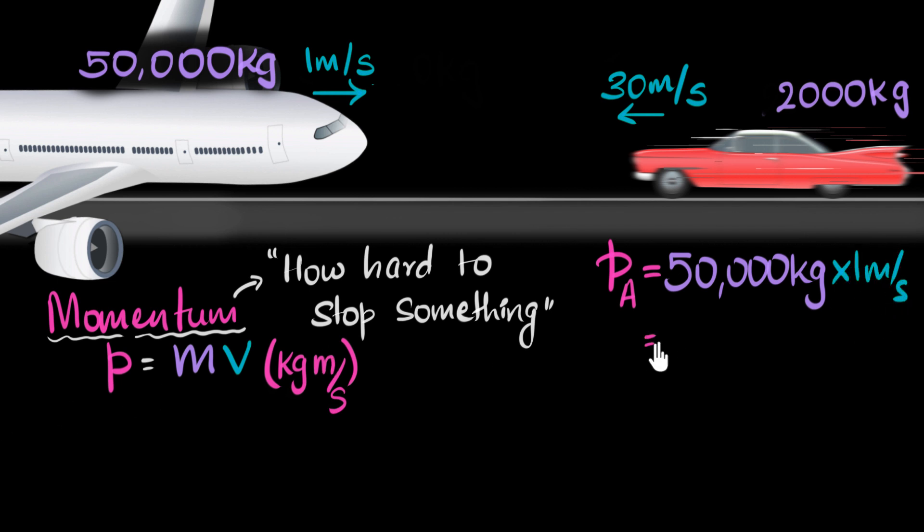And how much is that? Well, that is 50,000 times one. That's just 50,000. And the units are, notice I don't have to remember the units. I'll just look at this and I can multiply the units here itself. So the units are going to be kilogram meters per second.